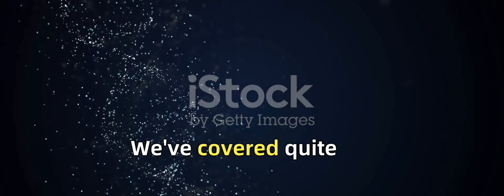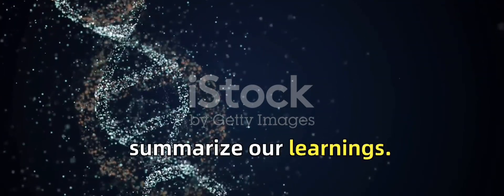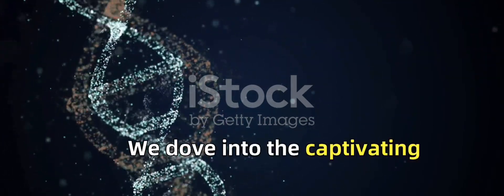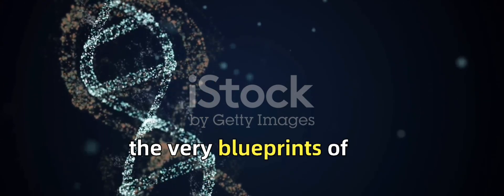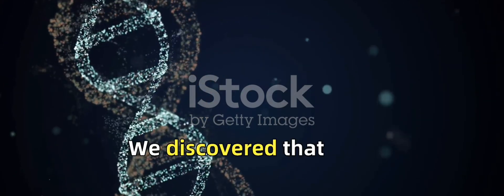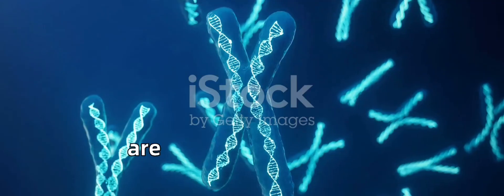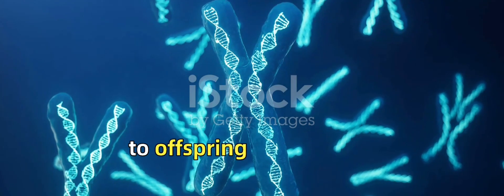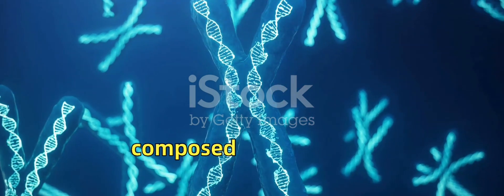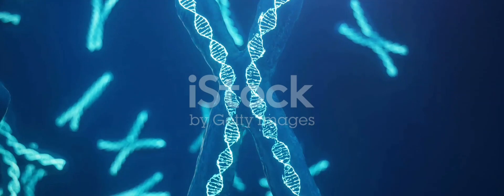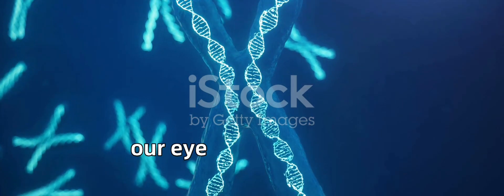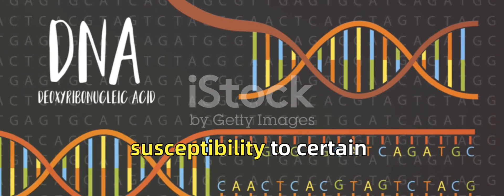We've covered quite a bit today, so let's take a moment to summarize our learnings. We dove into the captivating world of genetics and heredity, the very blueprints of life. We discovered that genetics is the study of how traits are passed down from parents to offspring through genes. These genes, composed of DNA, serve as instructions for building and maintaining our bodies. They dictate everything from our eye color to our susceptibility to certain diseases.